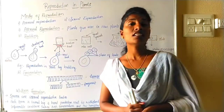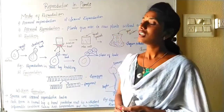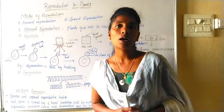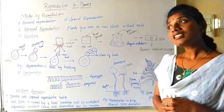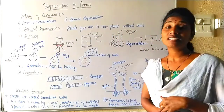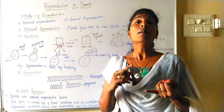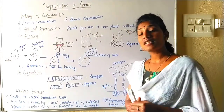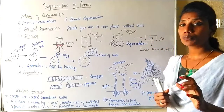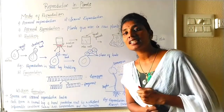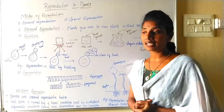Let us learn about the other types of asexual reproduction. You might have heard about the organism yeast. Yeast is very well known in bakeries and beverage industries, where it is used for preparation of bun and bread. This yeast is a unicellular organism and it is microscopic — under the microscope only we can see the yeast, because it is a unicellular organism.